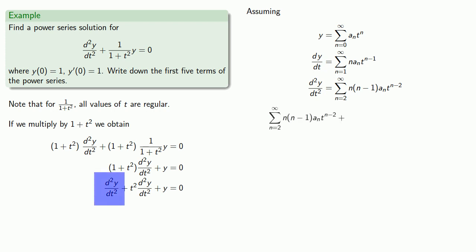So we need our second derivative. We need t squared times our second derivative. So we can multiply the terms of our series by t squared to get, and so there's our t squared plus our second derivative. And then finally, we need to add y itself.